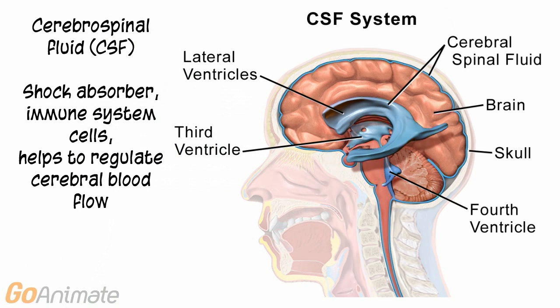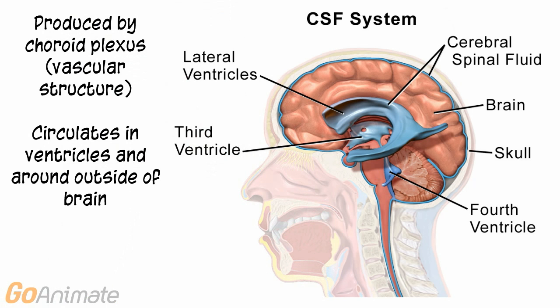Cerebrospinal fluid, or CSF, is a clear fluid that circulates inside and around the brain. It functions as a shock absorber. It contains immune cells and helps to regulate cerebral blood flow. CSF is produced by the choroid plexus, which is a vascular structure.